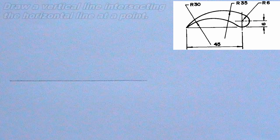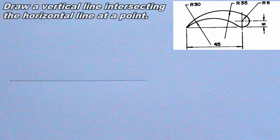The next thing I will do is to draw a vertical line. The vertical line should intersect the horizontal line at a point. The point where the vertical line intersects the horizontal line should be 45mm from the left end of the horizontal line.